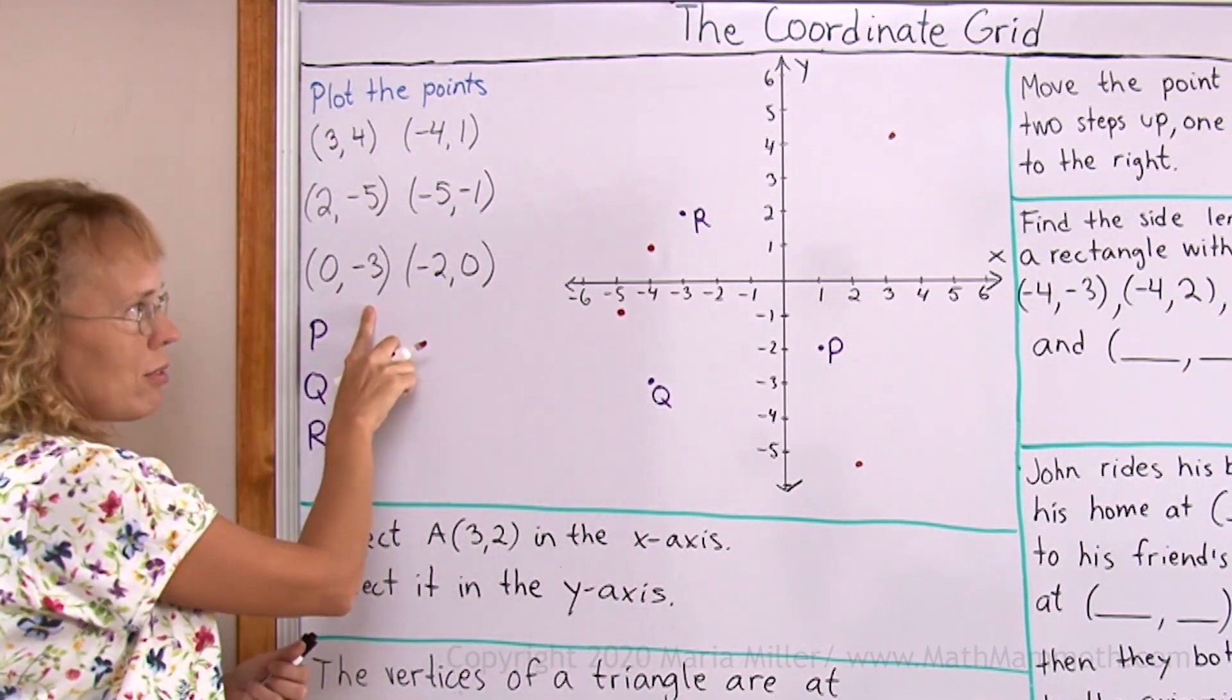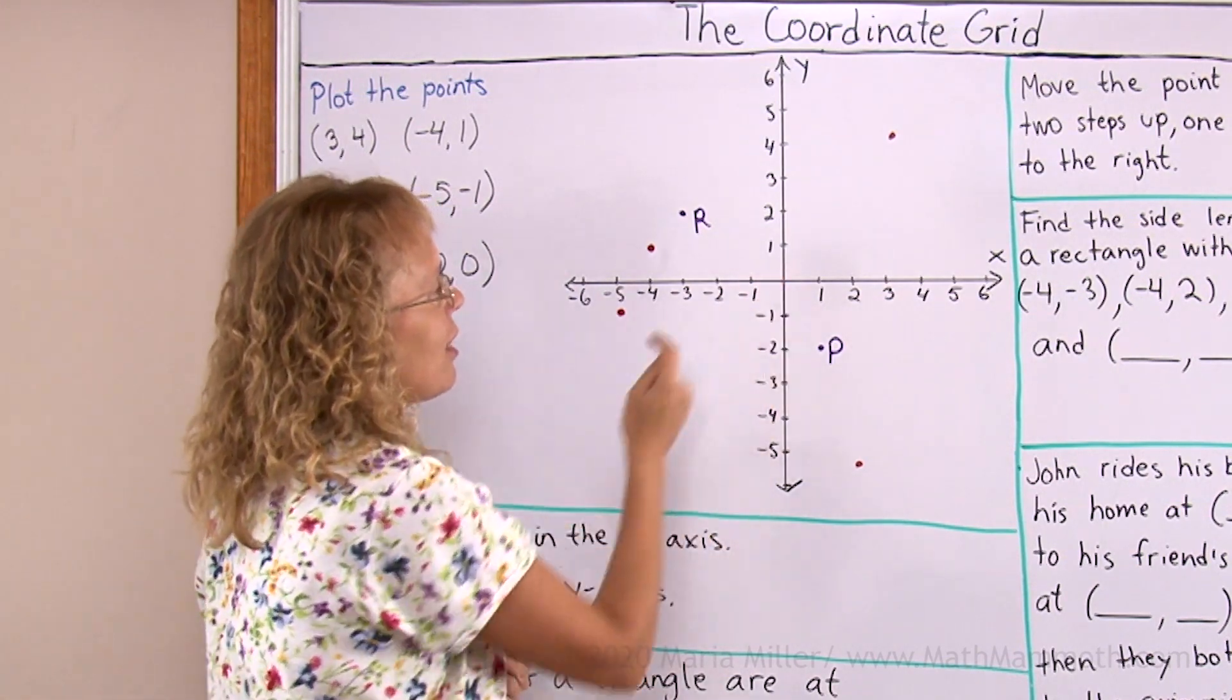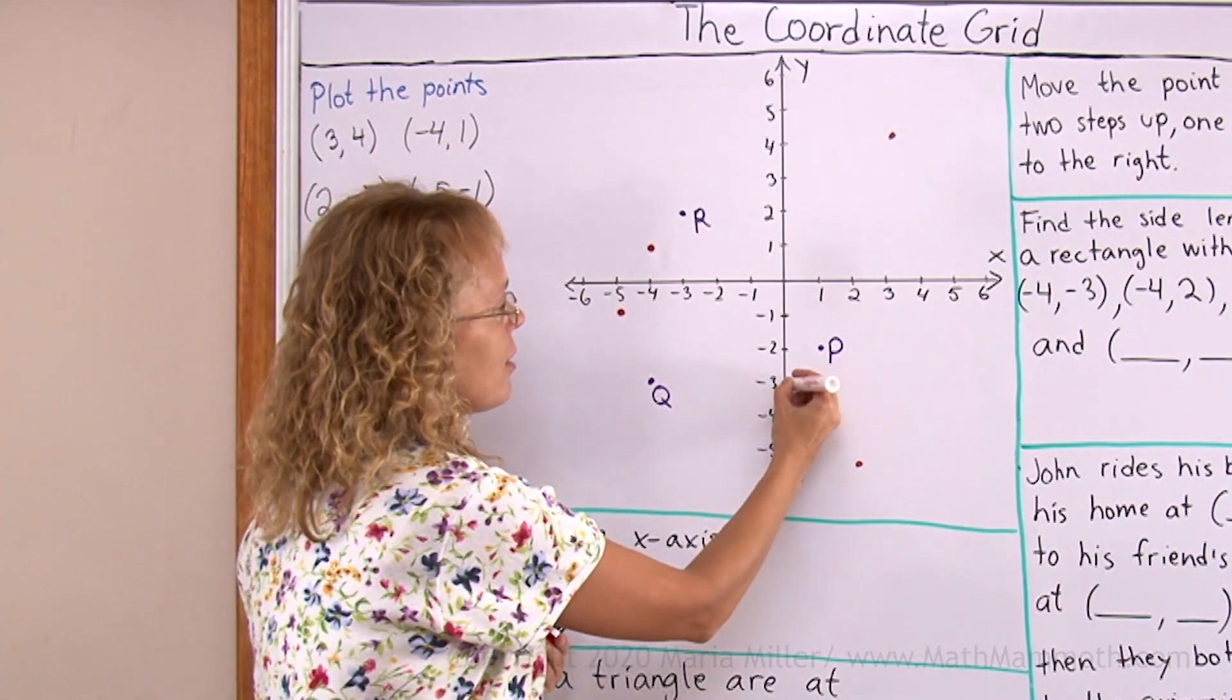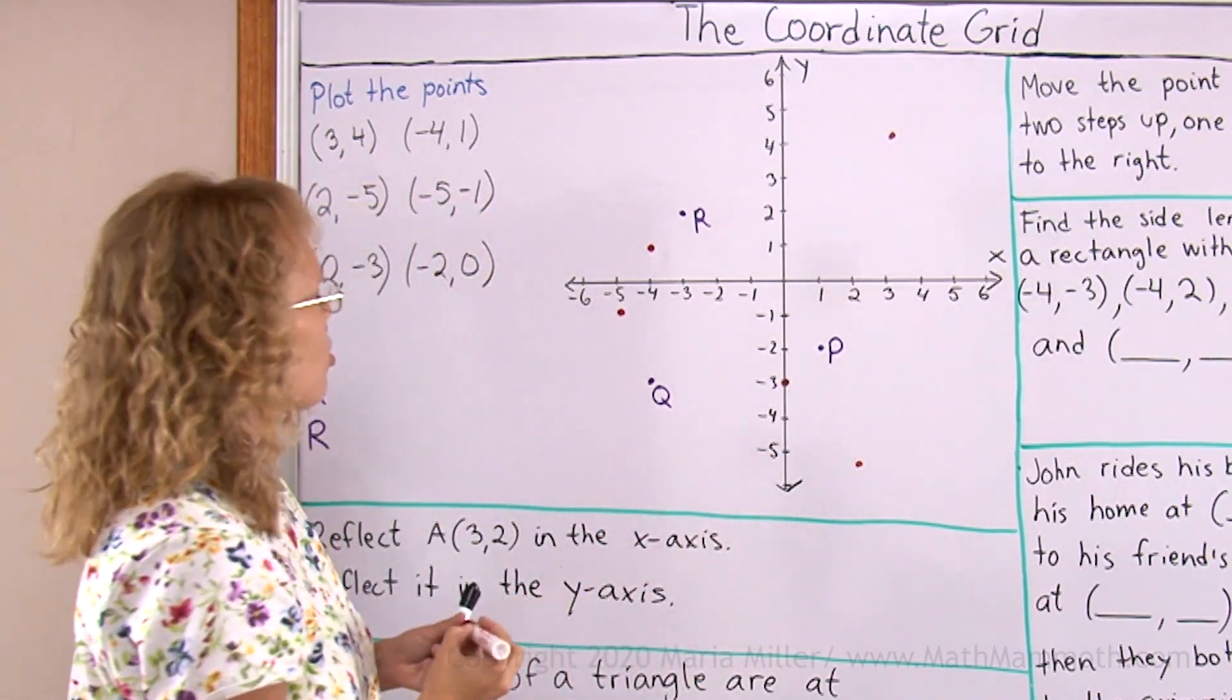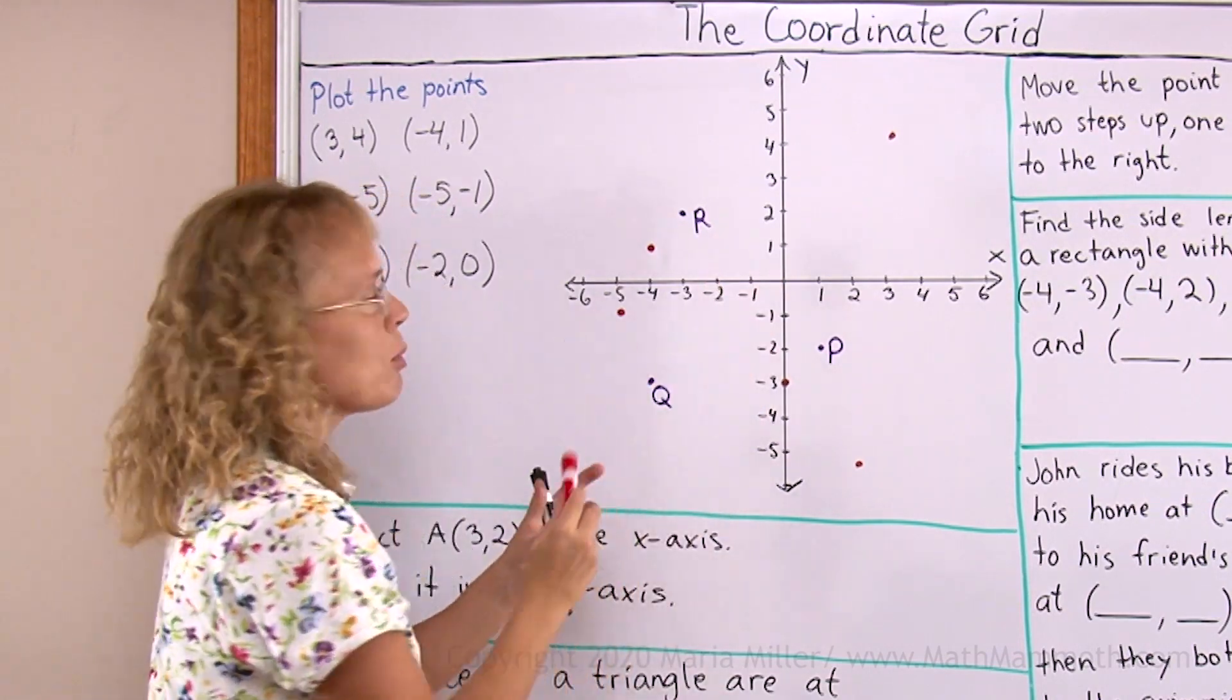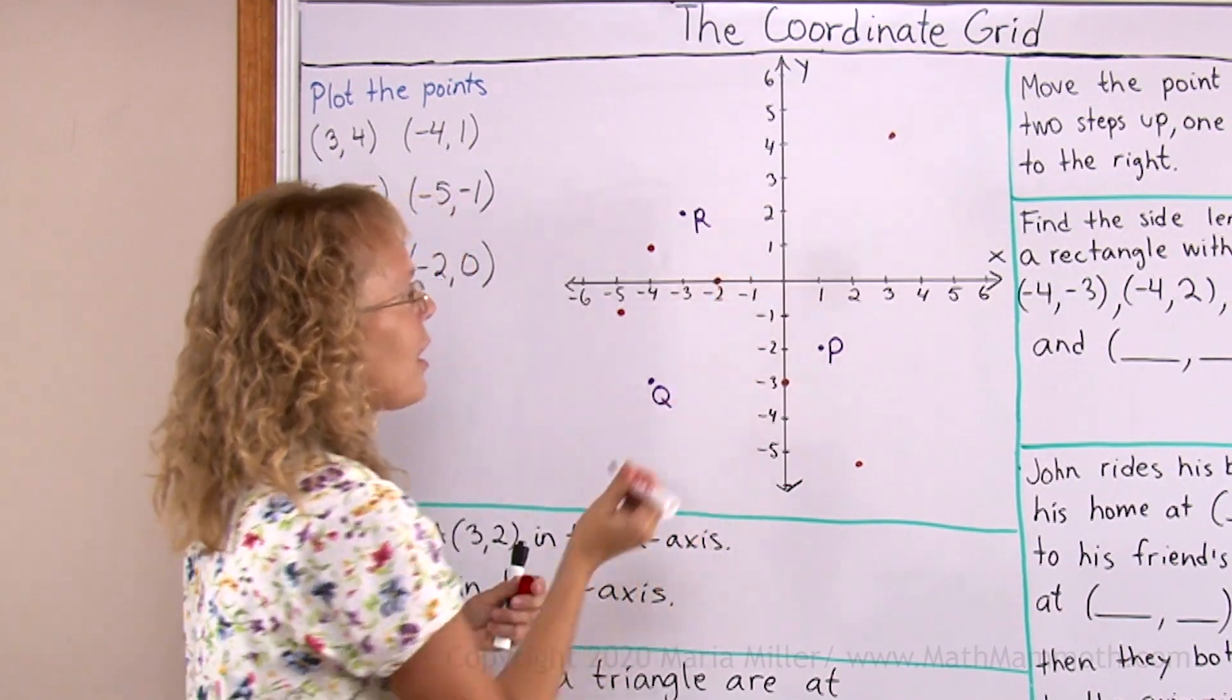(0,-3). I go on the x-axis to 0, which is right there. Then I go either up or down. Down in this case, over here. And then (-2,0). I go on the x-axis to -2 and then I move 0 units up or down. So I move nowhere. It's right there on the x-axis.